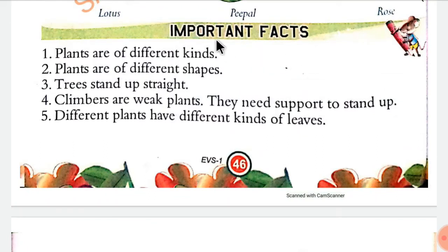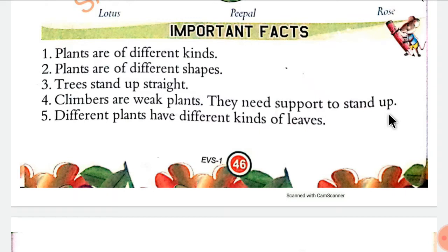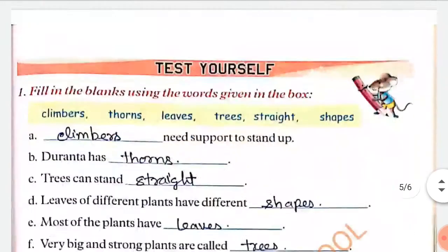Important facts: Plants are of different kinds, shapes and sizes. Trees stand upright — trees are straight and tall. Climbers are weak plants, they need support to stand up. Different plants have different kinds of leaves.